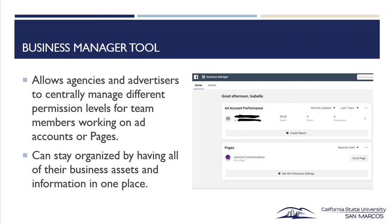We'll start with the Business Manager tool. The Business Manager tool allows agencies and advertisers to centrally manage different permission levels for team members working on ad accounts or pages. Here's a screenshot of what mine looks like — I have the credit card information blacked out. It's a Business Manager page and your clients can set these up and give you permission to join them. It's a great way to stay organized by having all assets in one place and seeing who has access to what.